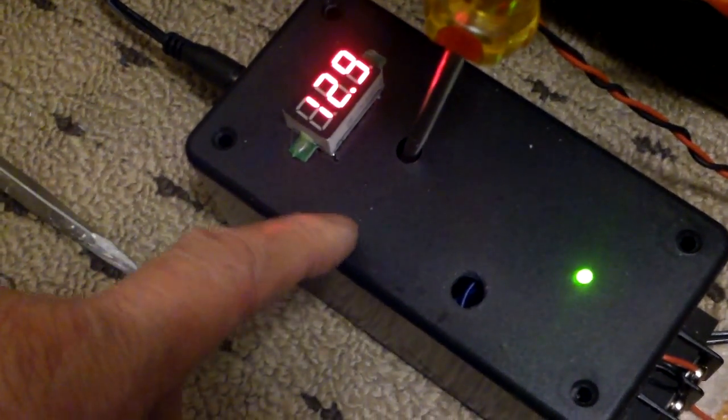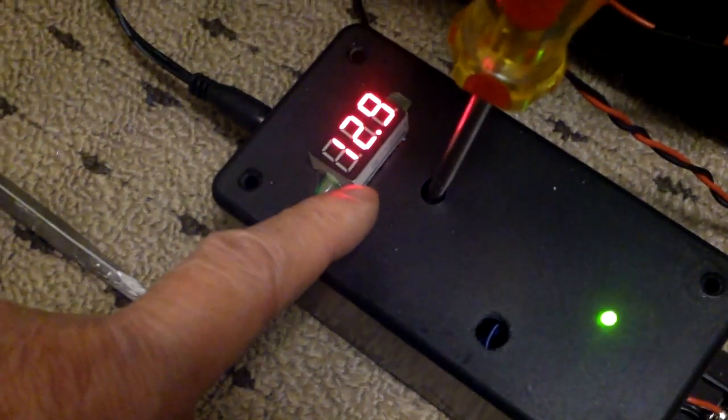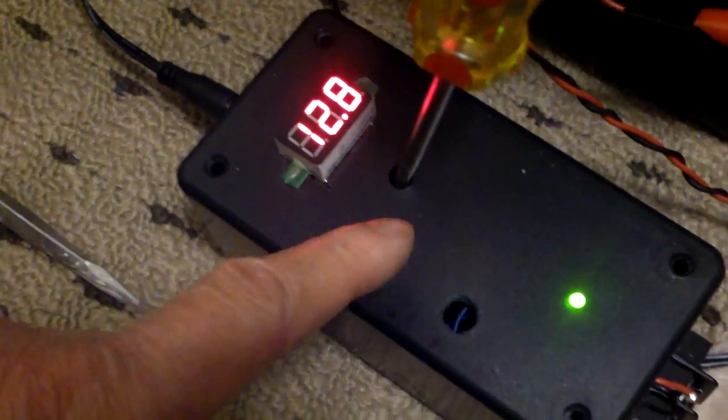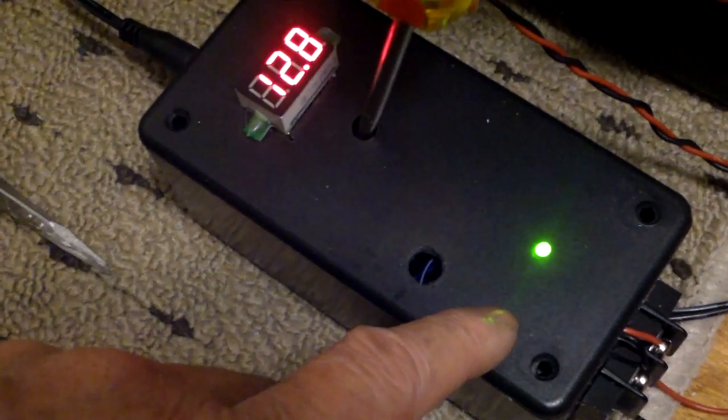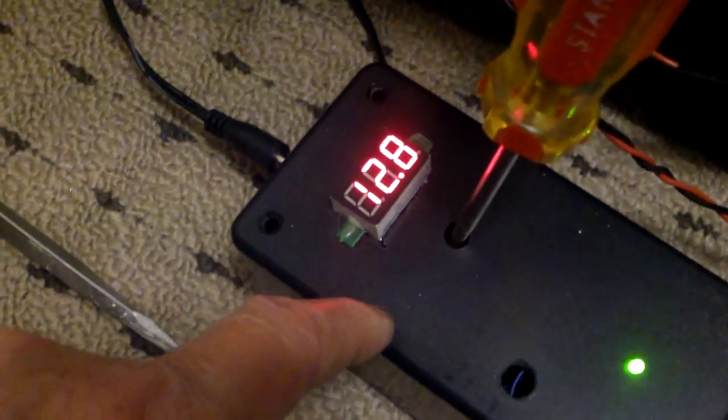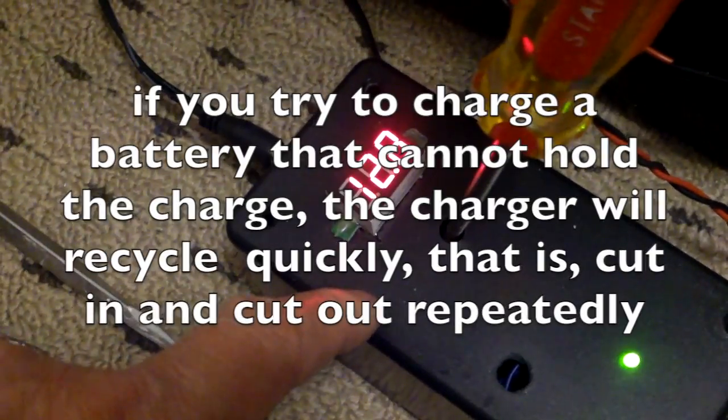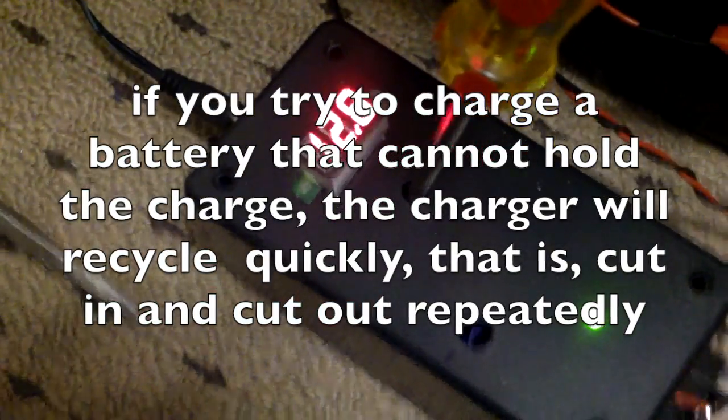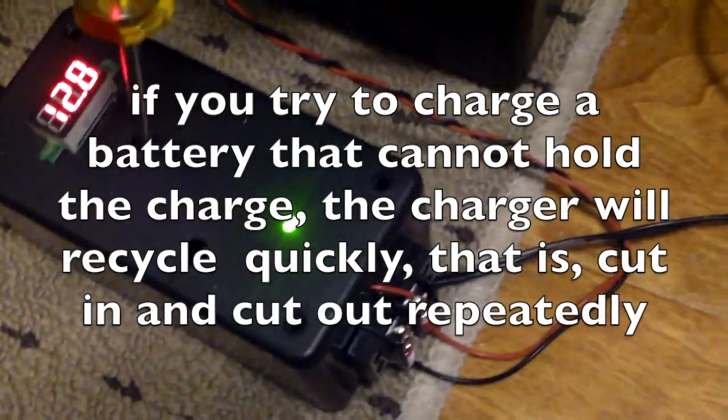You can see that it is cutting in and out. It starts to cut in at about 12.8 volts, the light goes out, and then the voltage goes up to 13.6 volts or so and then it stops charging.